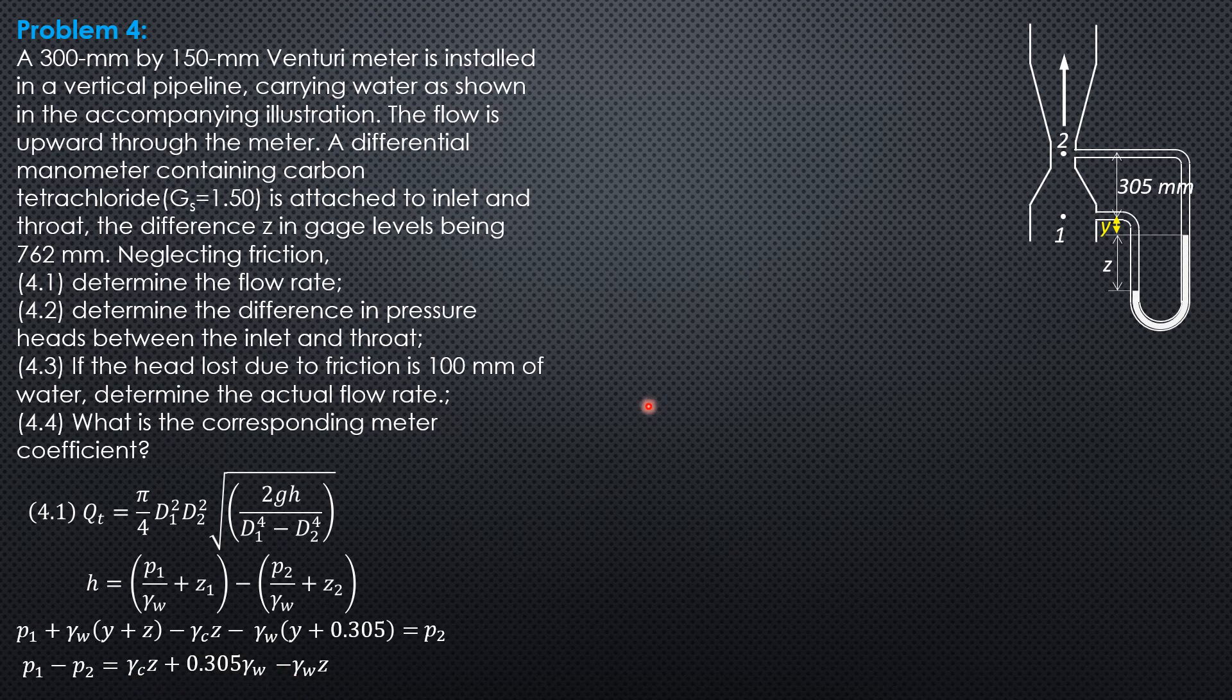Then we divide everything by gamma of water because the flowing liquid is water. So P1 pressure head at 1 minus pressure head at 2 equals gamma of carbon tetrachloride over gamma of water z plus 0.305 minus z. That's the equation.